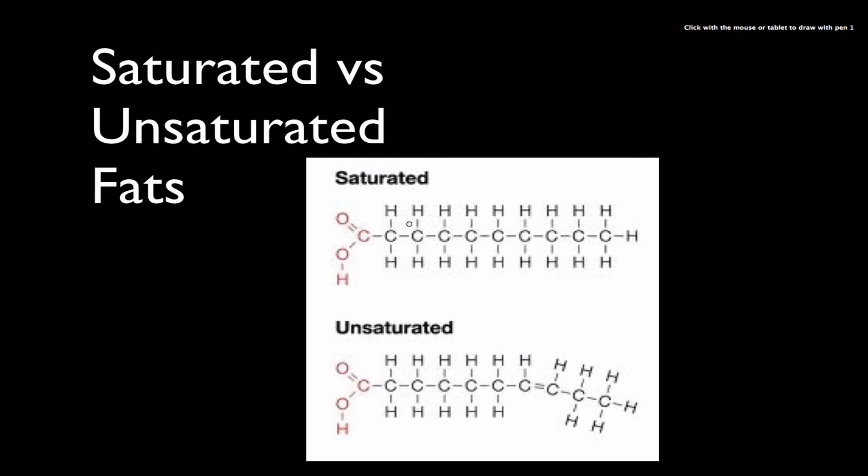So each of the four covalent bonds for this whole chain of carbons is filled with hydrogen, whereas this fatty acid chain down here has been unsaturated. If you look, there's a double bond right here, and because there's a double bond we've lost two hydrogens. So to put this double bond in here, we had to take out two hydrogens, so it's been desaturated.